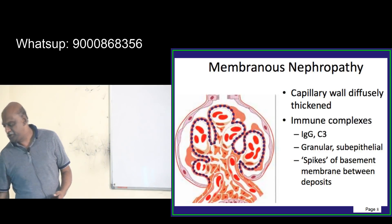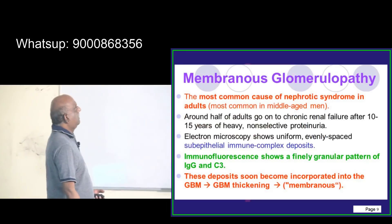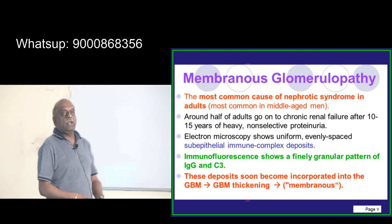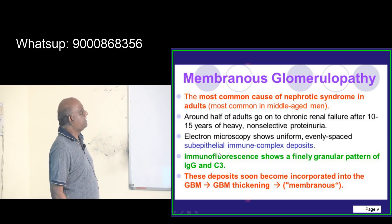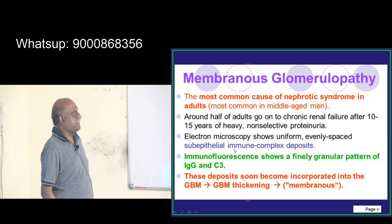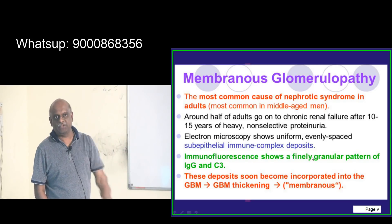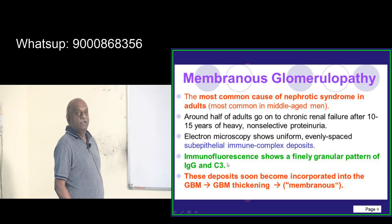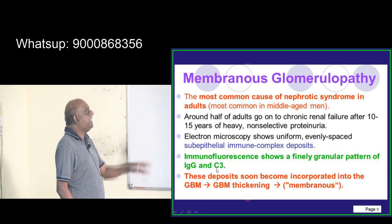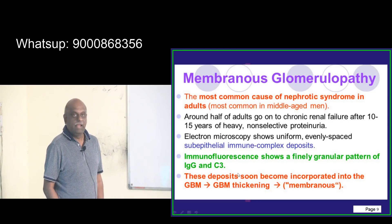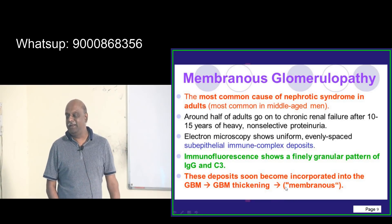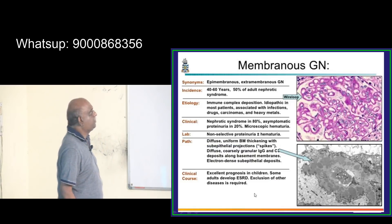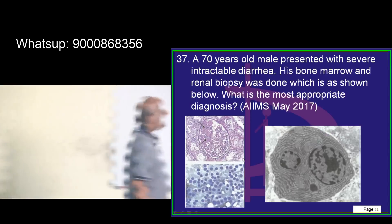You have to be 100% sure. The most common cause of nephrotic syndrome in adults is membranous glomerulonephritis, and typically sub-epithelial immune complex deposits — you should be doubly sure. Fine granular pattern of IgG and C3 and thickening of the glomerular basement membrane is a classical feature which you need to remember.